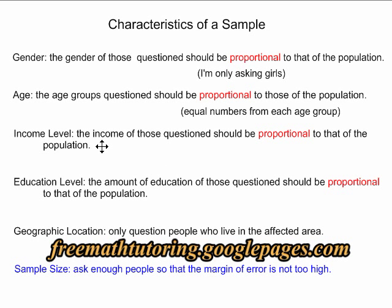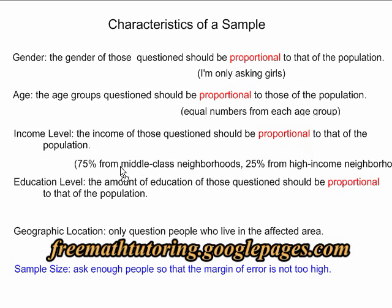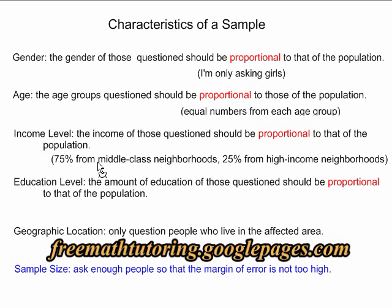How about income level? Decisions about whether you want to take the bus or the train, how you travel to school, might have a lot to do with how much money you have to spend on transportation. In this case, 75% of the students in the school are from middle-class neighbourhoods and 25% are from higher-income neighbourhoods. We'll make sure our sample reflects that — we will ask 75% of people from middle-class neighbourhoods and 25% from high-income neighbourhoods.